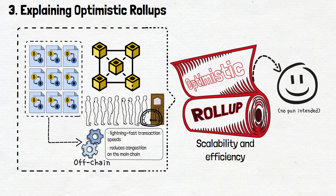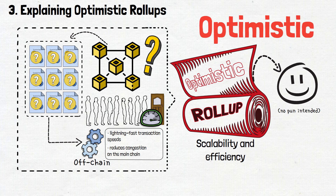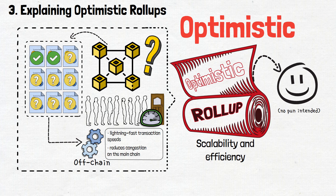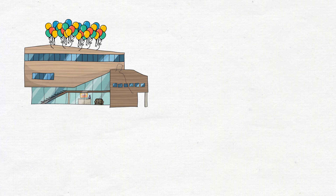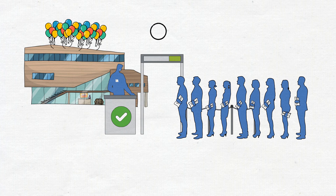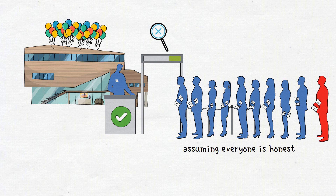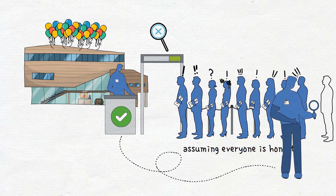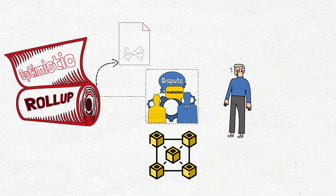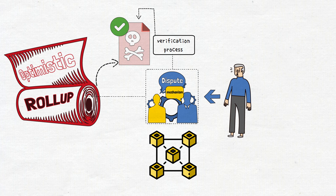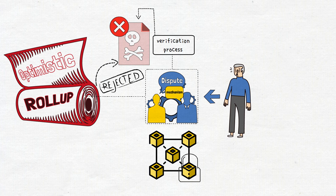It's like handling a queue outside of a busy event entrance to speed up the process. The main chain assumes all off-chain transactions are valid unless someone raises a concern — that's the optimistic part. Imagine a company hosting an event and trusting that everyone in the queue has a legitimate ticket. They allow people in without checking tickets up front. However, if someone tries to sneak in with a fake ticket, a guest might notice and warn the event's host — that's when security checks the fake ticket and kicks them out. Similarly, in optimistic rollups, a dispute mechanism exists on the main chain. If someone spots an invalid transaction, they can raise a dispute, triggering a verification process. If the transaction is indeed fraudulent, it gets rejected, maintaining the integrity of the network.